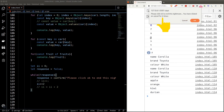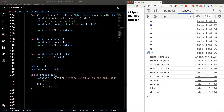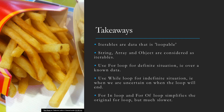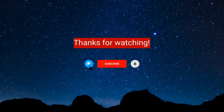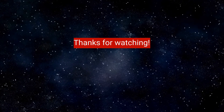There's a lot to take in this lesson — play around with the code and get comfortable with it. Key takeaways: iterables are data that is loopable — strings, arrays, and objects are iterables in JavaScript. Use a for loop for definite situations like looping through known data. Use a while loop for indefinite situations when you're uncertain when the loop will end — it's perfect for conditions dependent on external factors like user interaction. The for-in and for-of loops simplify the original for loop but are slower as a trade-off. Leave a comment if you have questions, and don't forget to like, subscribe, and hit the bell icon!